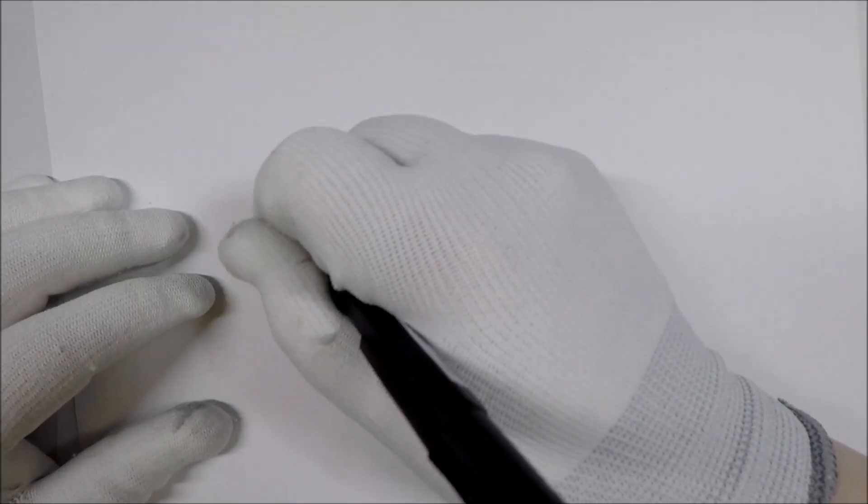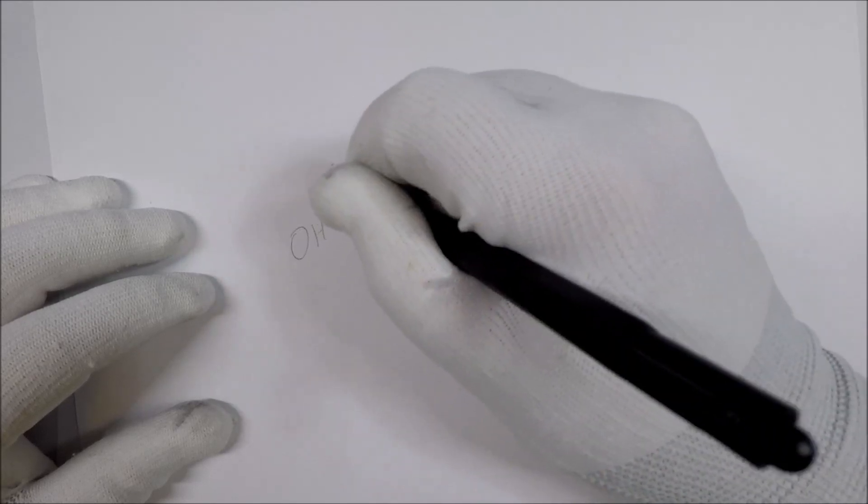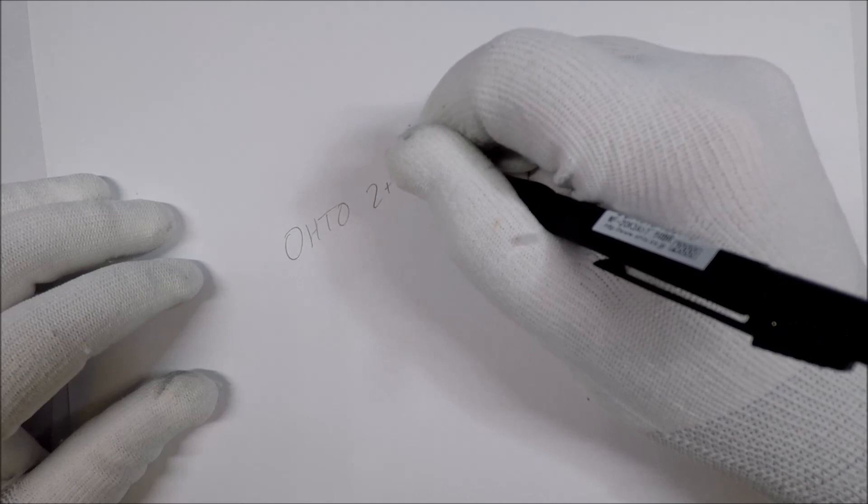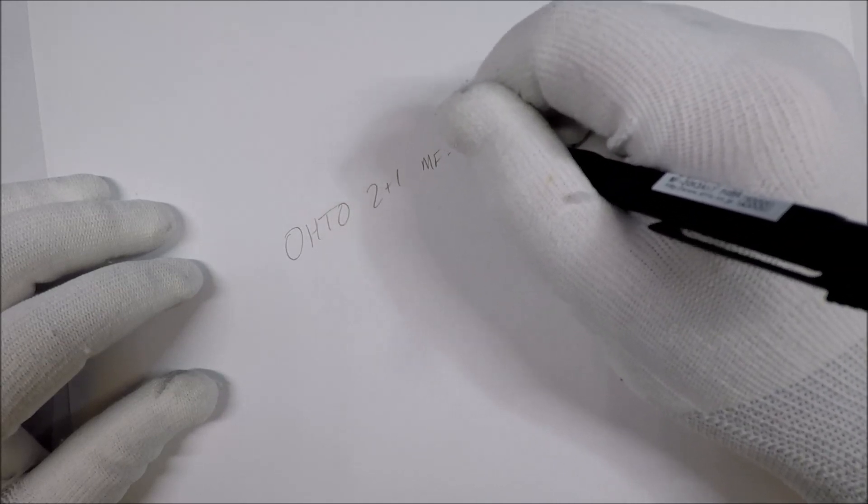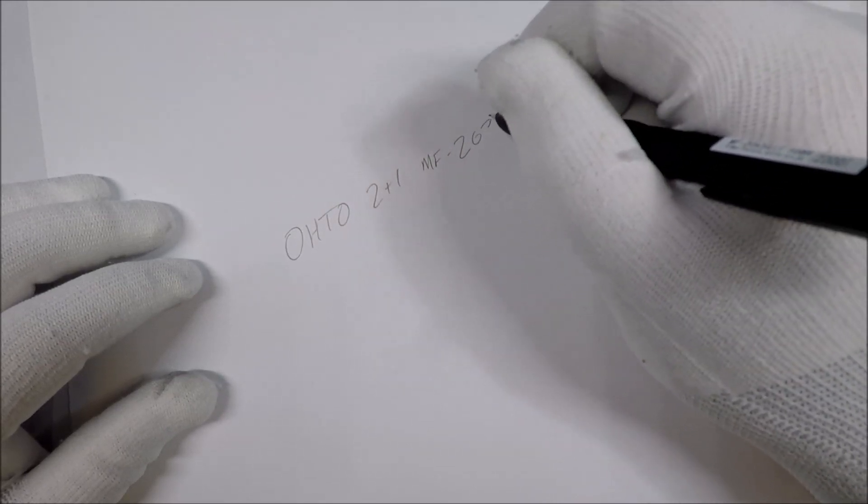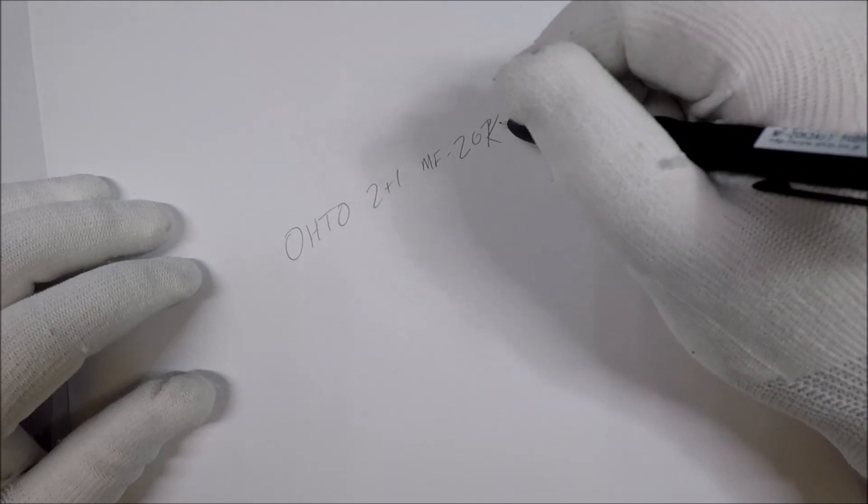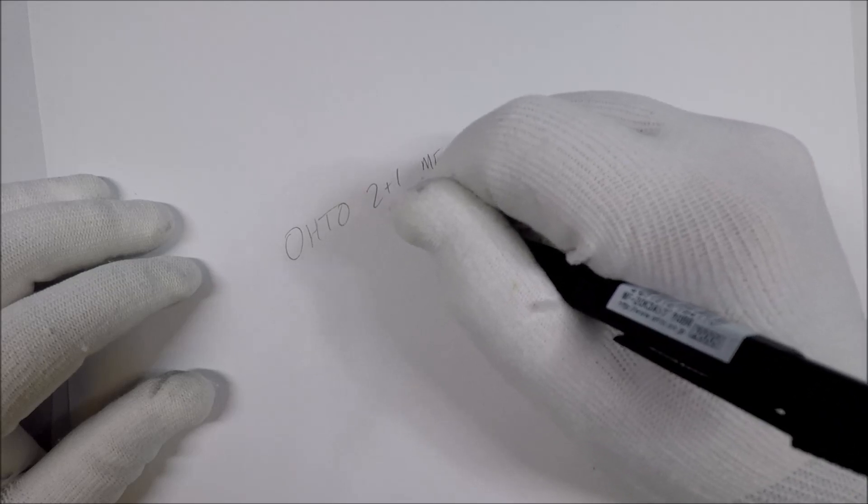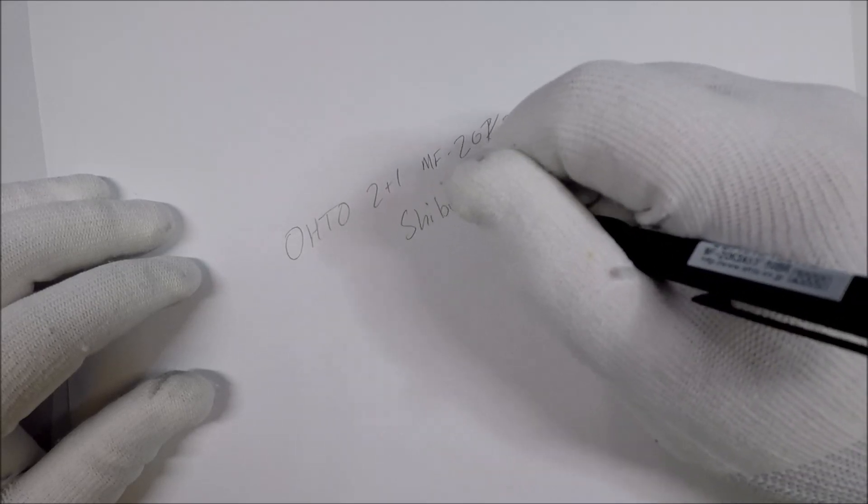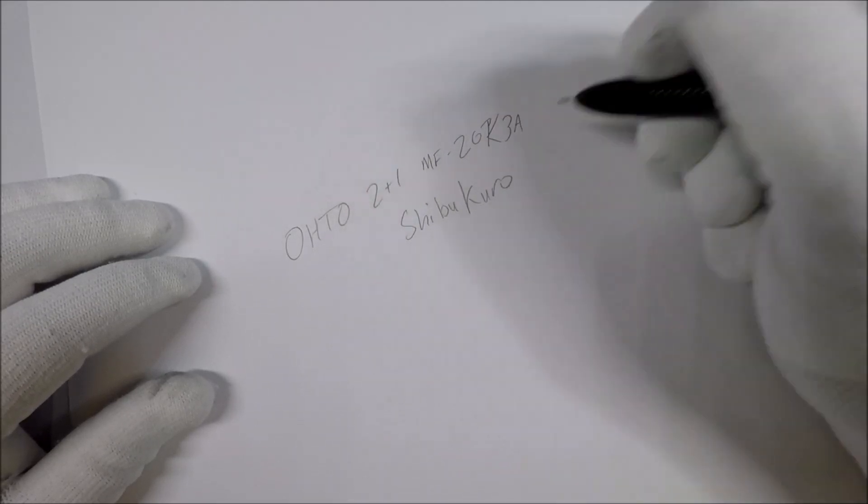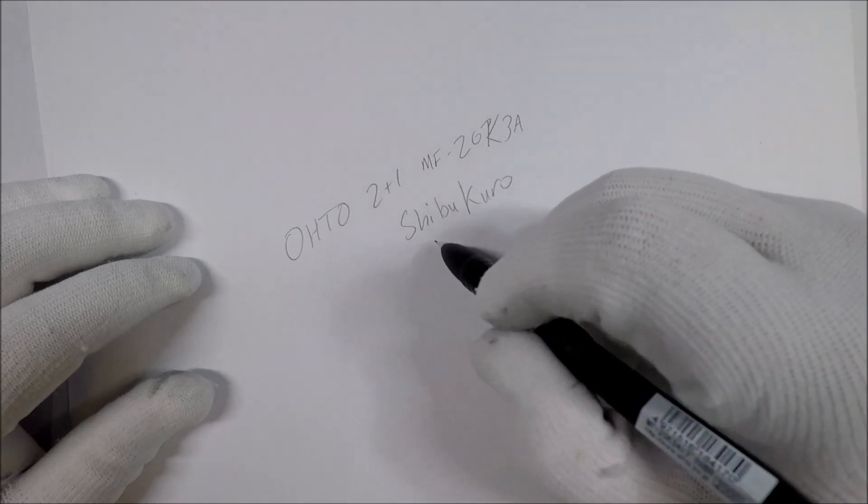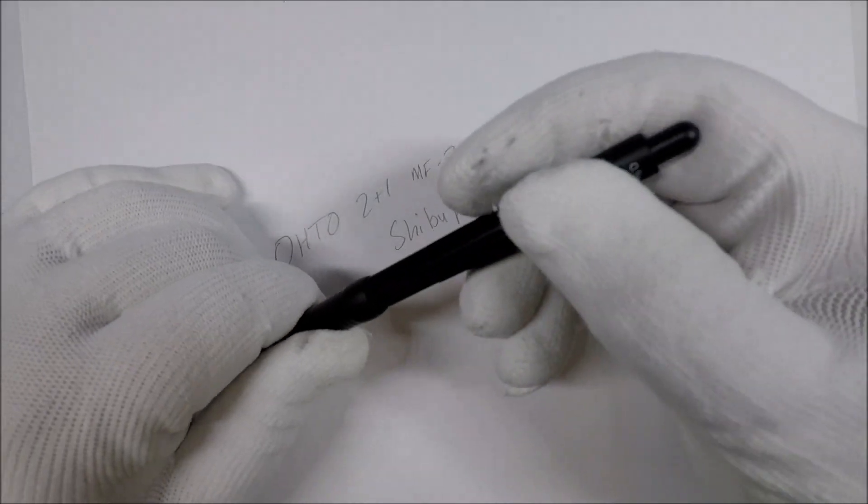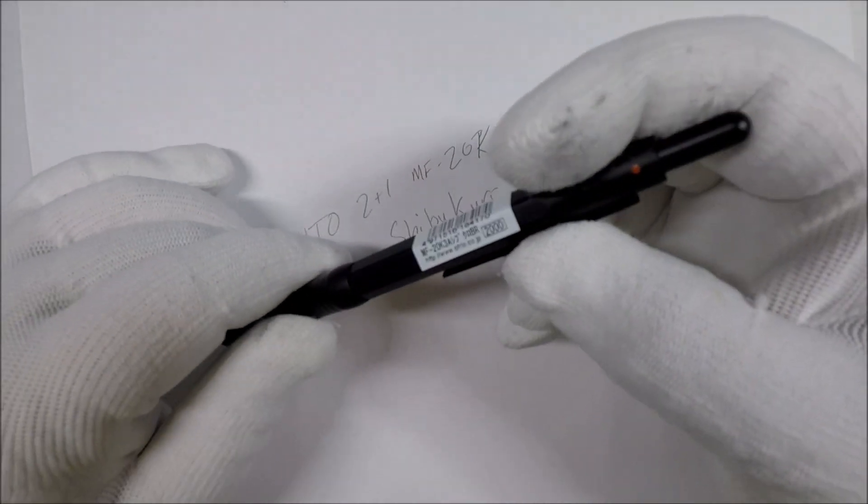So, this is the Oto 2 plus 1. And I'm going to make sure I get this number right. So, you've got MF20K-K-3A, and then it's S-H-I-B-U-K-U-R-O. So, Shibu, Shibukuru? I don't know. So, you've got that one.